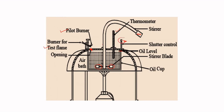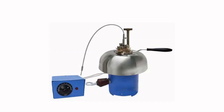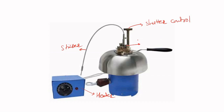If you rotate the shutter control, it opens the shutter and allows the oil vapours to go outside from this point, and they are introduced directly to the pilot burner. The actual apparatus looks like this. As already mentioned, this is the stirrer; instead of a burner, we are using this heater. It is a shutter control. This is the point where you insert the thermometer. Here you will get a test flame. This is a closed cup apparatus.